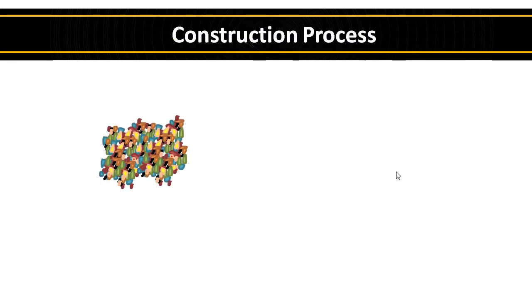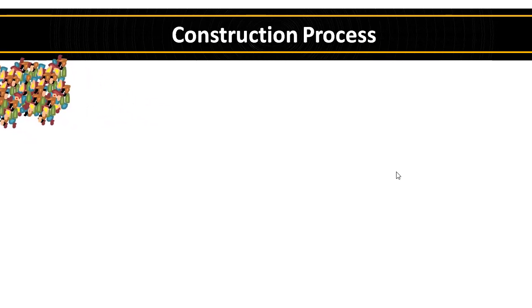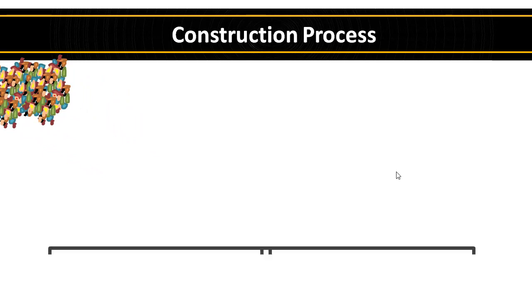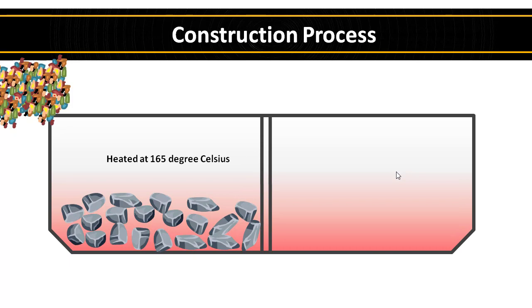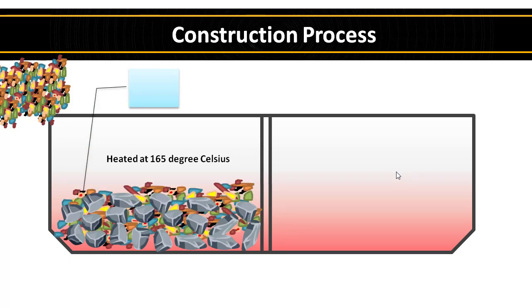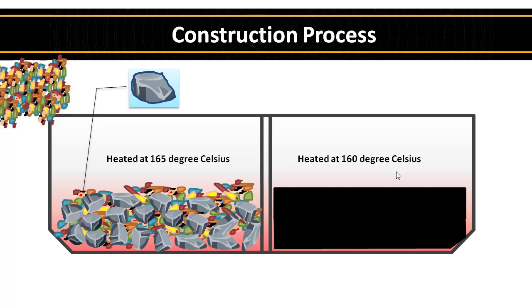Let's see the construction process in detail. First, plastic materials such as plastic wrappers, bottles, bags, etc., are collected from the dumpyard. Then the waste plastic is cleaned if necessary. Then all plastic materials are shredded into small pieces. Similarly, aggregate is heated at 165°C. Then all shredded plastic waste is mixed with the heated aggregate, coating the aggregate with plastic waste. Similarly, bitumen is heated at 160°C and then mixed with the aggregate-plastic mixture.